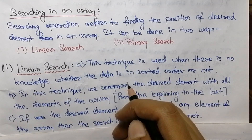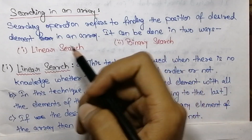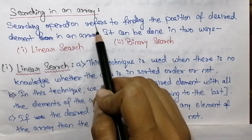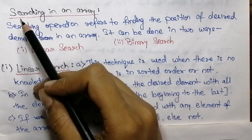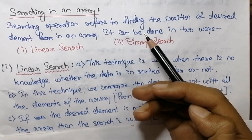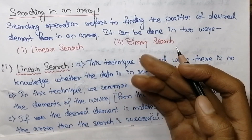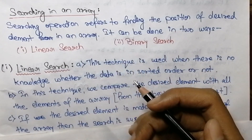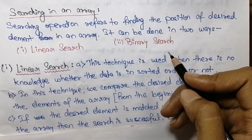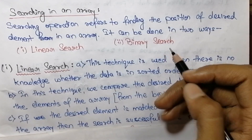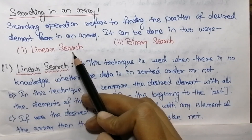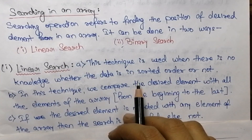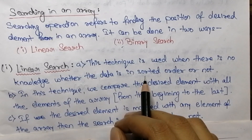We will cover its algorithm with an example and the equivalent source code. Searching operation refers to finding the position of a desired element in an array. We can find the position of a given data element using two different searching techniques: the first one is linear search and the second one is binary search.